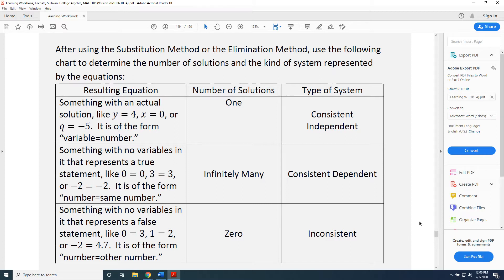The first column tells us the kind of equation we get after using the substitution or the elimination method. The second column tells us the number of solutions to the system based on the resulting equation. And the third column tells us the type of system we're dealing with based on the resulting equation.